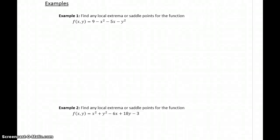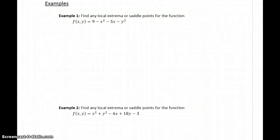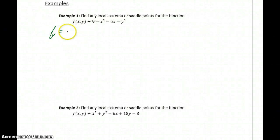In these examples, to identify any local extrema or saddle points, we're going to need to find the first derivative with respect to both x and y — two separate first derivatives — and then we're going to be looking at three separate second derivatives. Let's start off with the first derivative with respect to x, which in this case will be negative 2x minus 5.